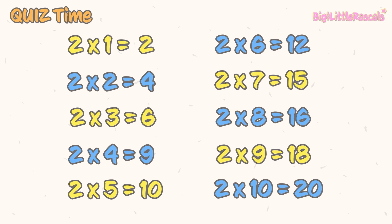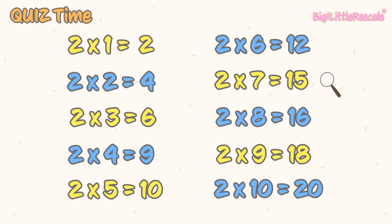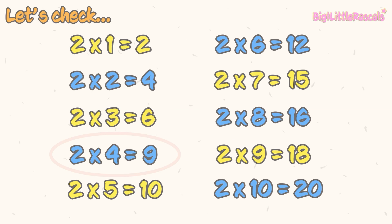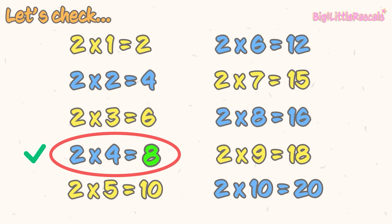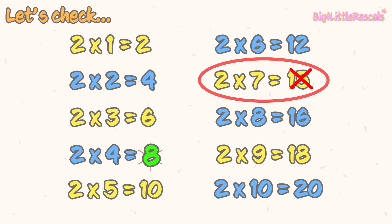Let's look at the multiplication by 2 table. In this table, there are 2 answers that are not correct. Can you find them? Let's zoom in on each one. Which are the incorrect answers? I'm sure you can find it. Let's check your answers. 2 times 4 equals 8, not 9. And 2 times 7 equals 14, not 15. Did you get them all correct?